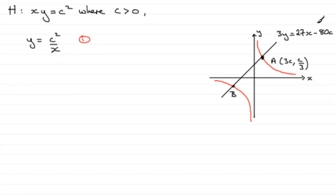And we've got our normal here, 3Y equals 27X minus 80C. So that's the second equation.